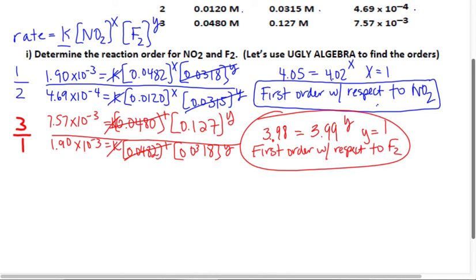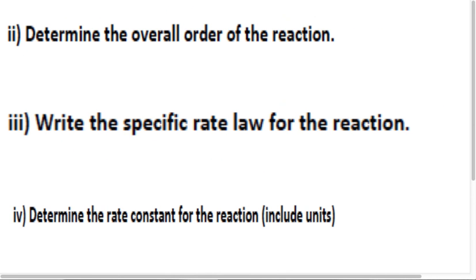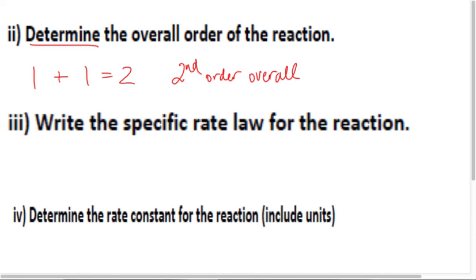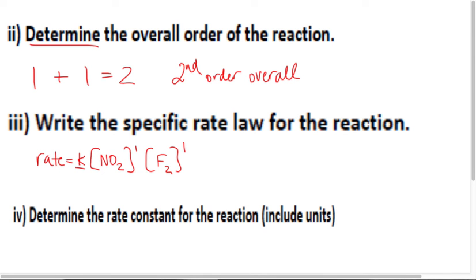Determine the overall order of the reaction. Because they say 'determined,' I do want you to show — as simple as it is — you're going to add up your two orders: 1 + 1 = second order overall. Now write the specific rate law. This is pretty easy: rate equals K times [NO2] to the first times [F2] to the first. That would be accepted. You're not required to solve for K because they haven't asked you to calculate it yet.